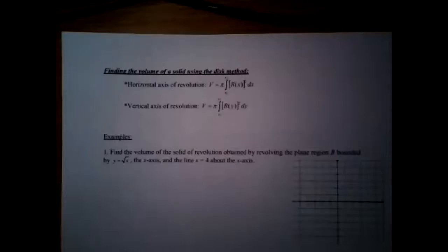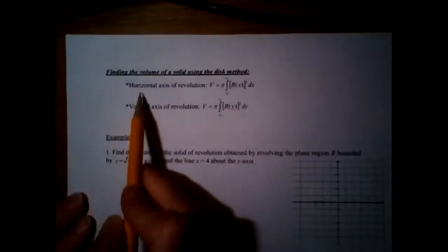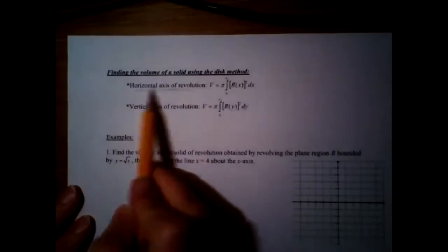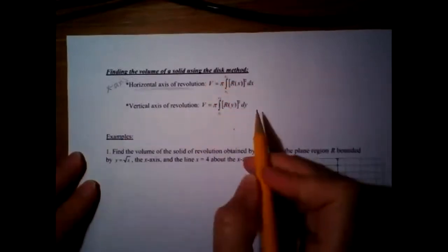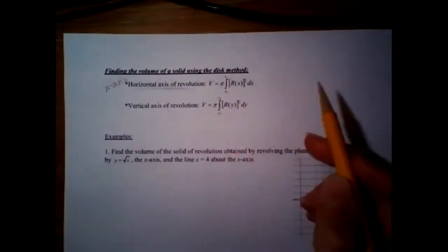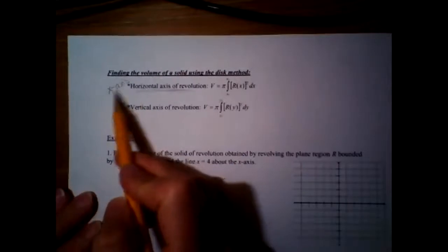All right, so you're going to do the disk method, which means all of your cross sections are going to be circular — you're spinning around an axis. We have dx problems and dy problems. If you have a horizontal axis of rotation, like the x-axis, it's going to be a dx problem.